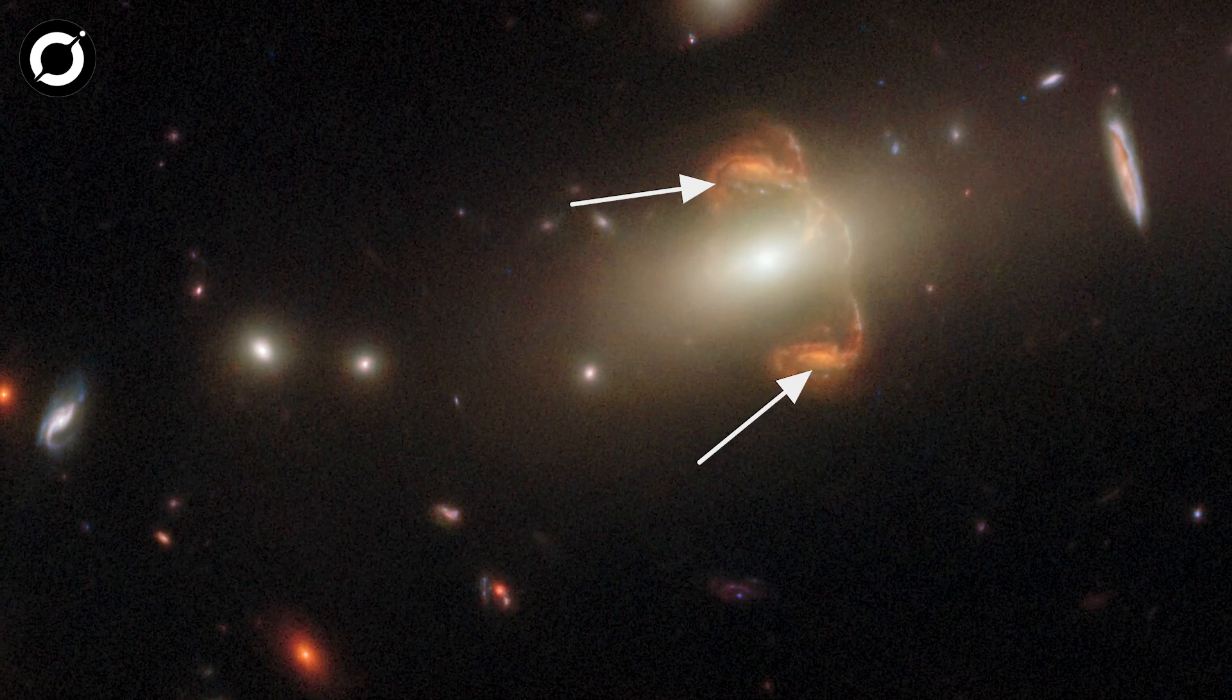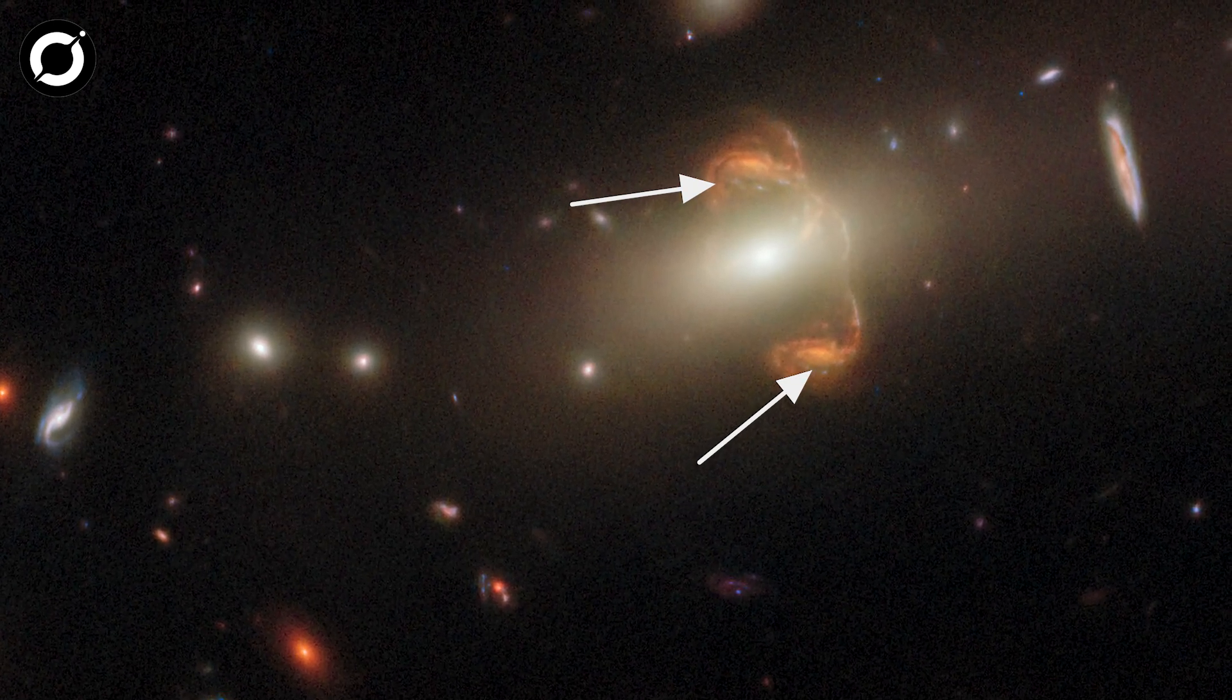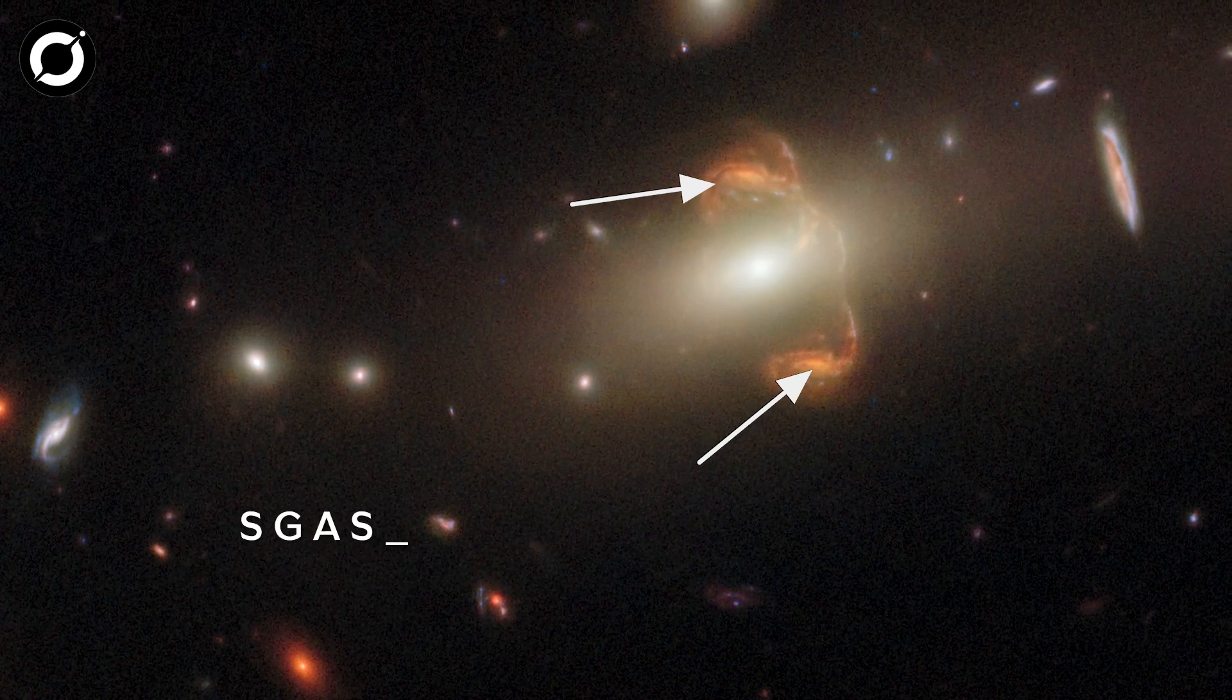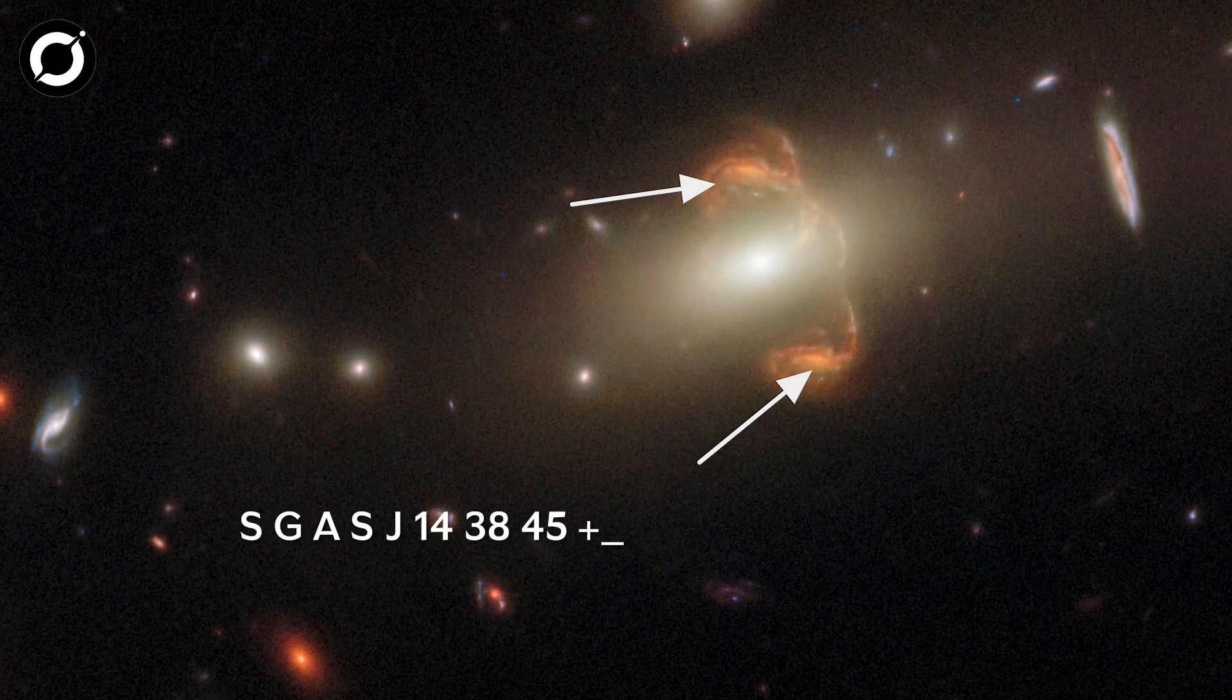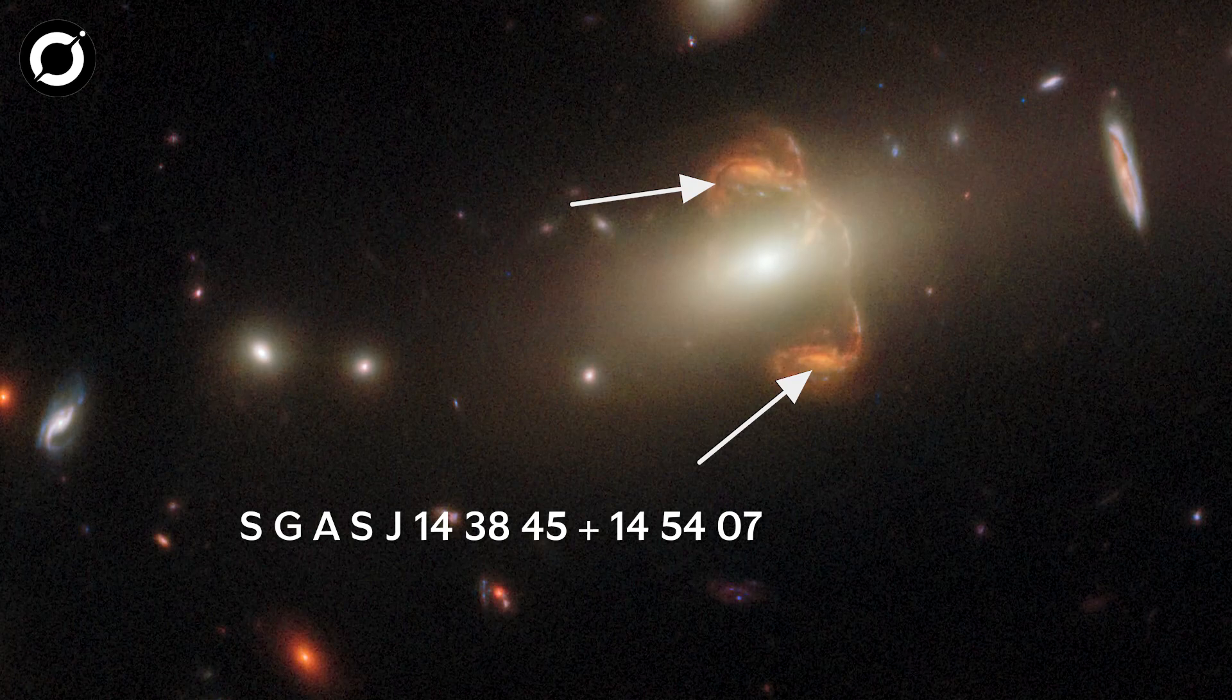Fascinatingly, that's not two galaxies at all, but one, named SGASJ143845 plus 145407. It just appears to be two.